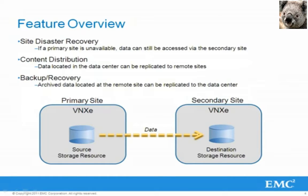Remote replication can be leveraged in many situations, including site disaster recovery. If a primary site were to go down due to a disaster, the secondary site would be used to access the information. For content distribution, data located in a data center can be replicated to the remote site for local access. And for backup and recovery purposes, archived information located at the remote site can be replicated back to the data center.